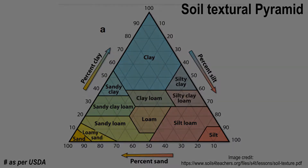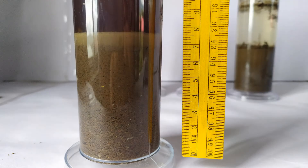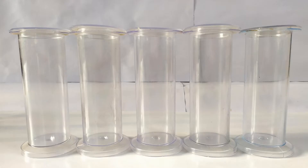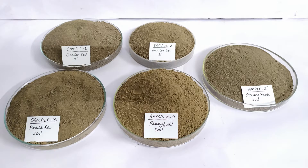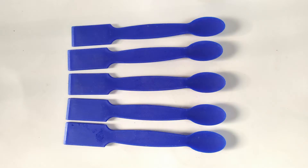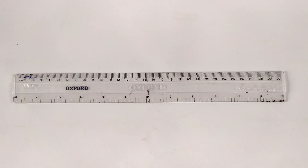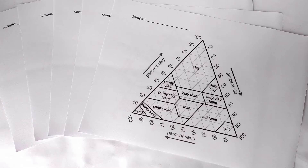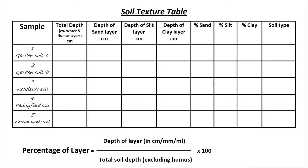In this video, we will determine the soil texture of five different samples of soil collected from five different areas. The following materials are required: five identical graduated cylinders or gas jars, five soil samples collected from five different locations, five spatulas or spoons, a measuring scale, printout copies of the soil textural triangle diagram, and a data entry table.